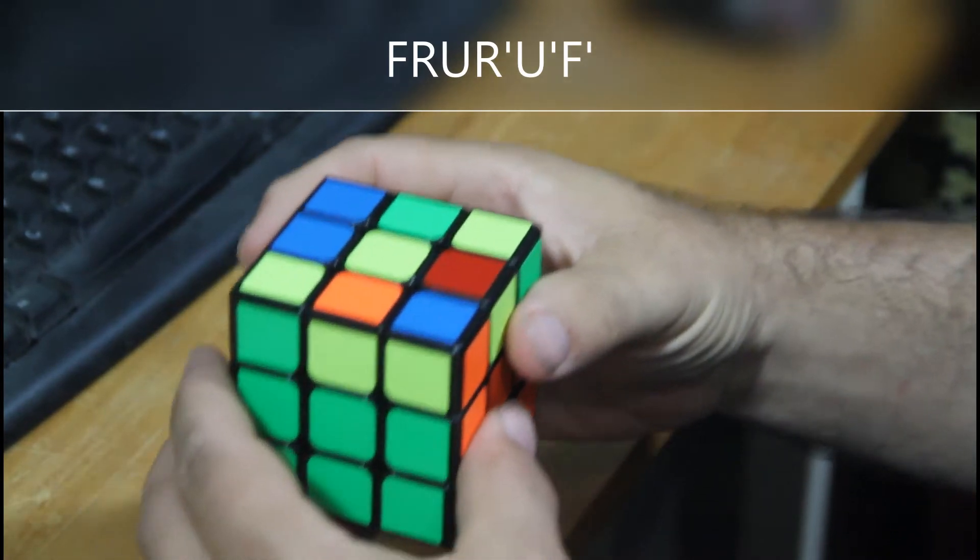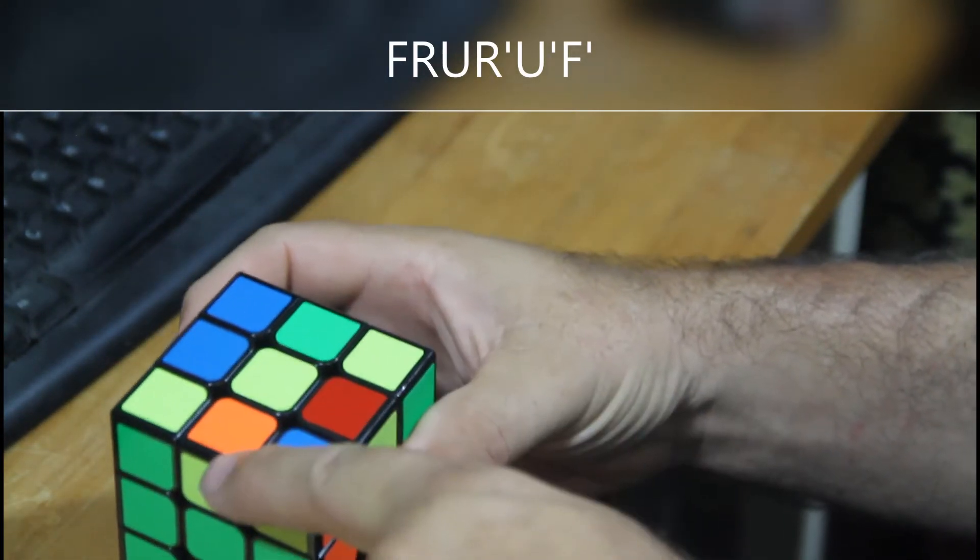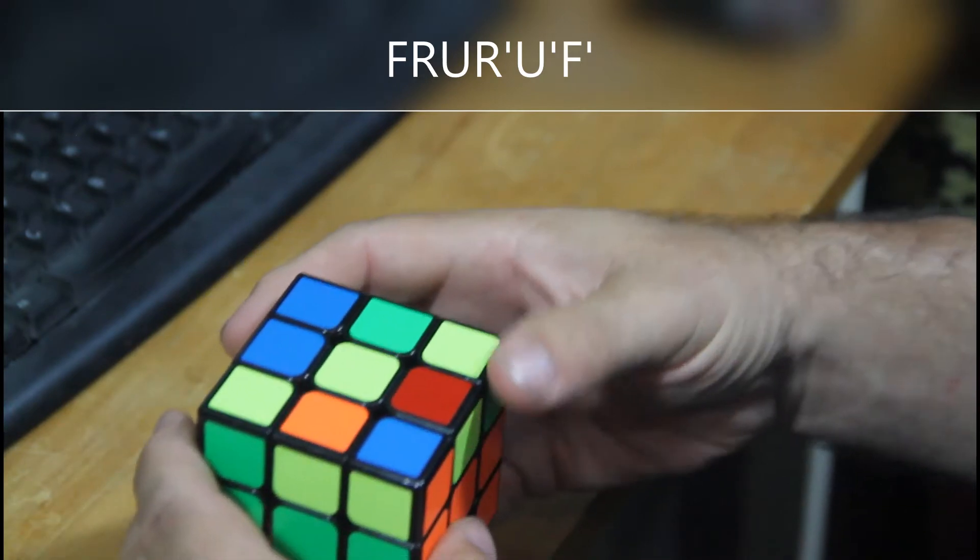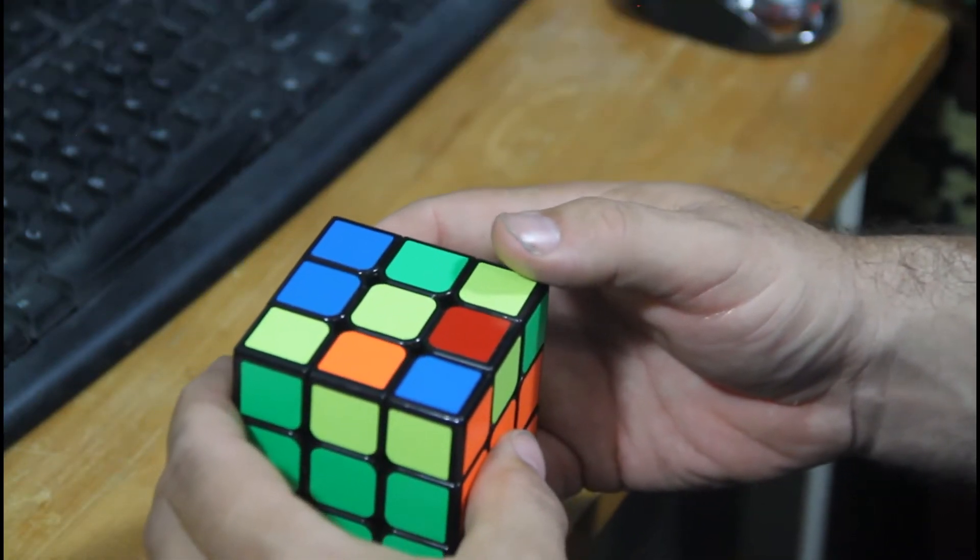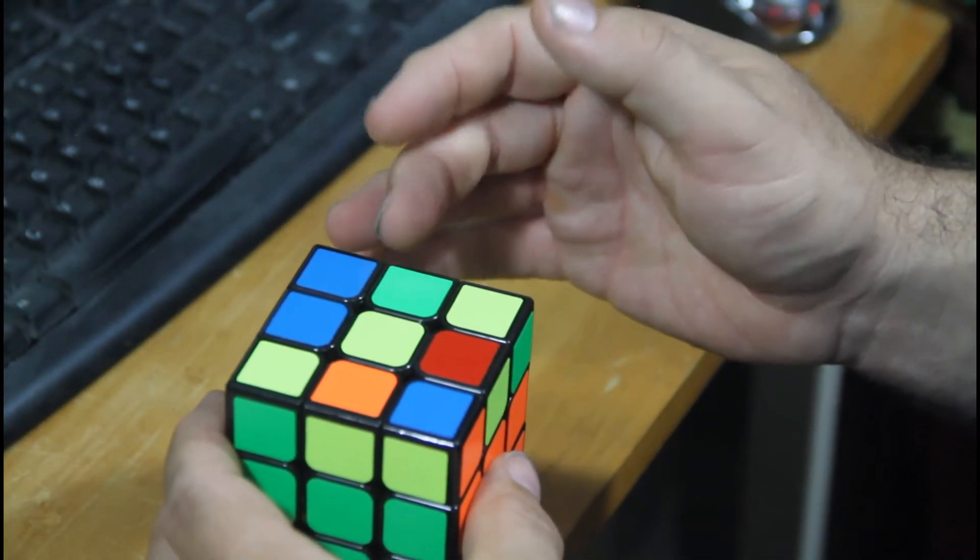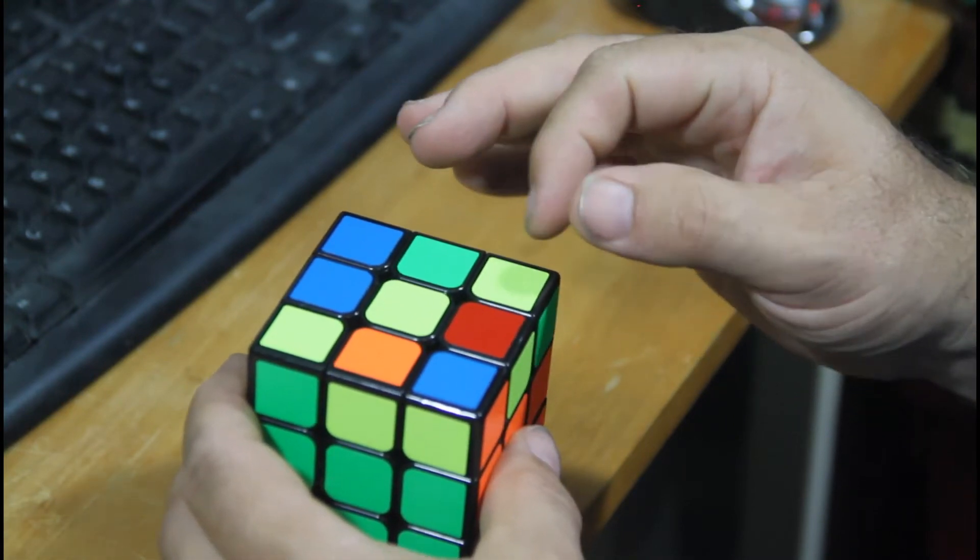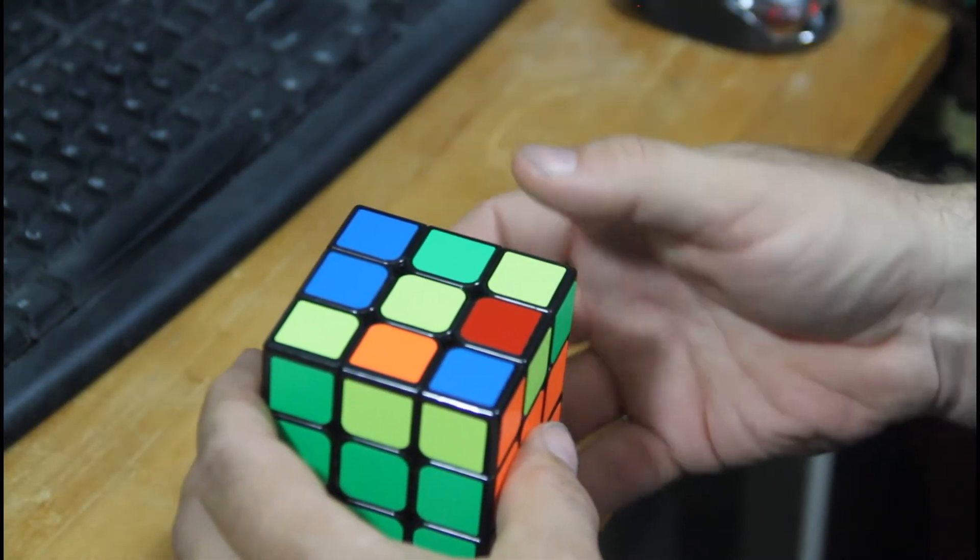Now we need to get the yellow. We didn't start by making a yellow cross and working on the corners. There are four possibilities: possibility one, you have none of the edge pieces; possibility two, you have a straight line; possibility three, you have an L shape; and the last one, you get lucky and you have them all.